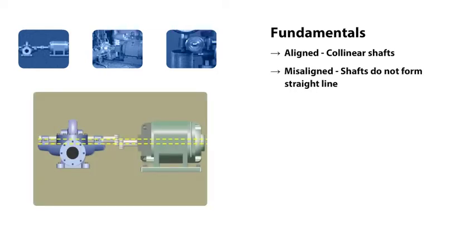If the shafts don't form a continuous straight line, the shafts are out of alignment. That is, they're misaligned.